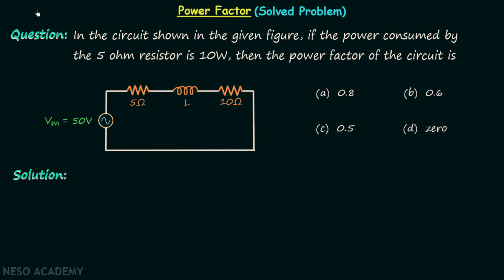In the previous lecture we had discussion on apparent power and power factor and in this lecture we are going to solve one question in which the calculation of apparent power and power factor is required. In the circuit shown in the given figure, if the power consumed by the 5 ohm resistor is equal to 10 watts, then the power factor of the circuit is — and we have four options given in the question.